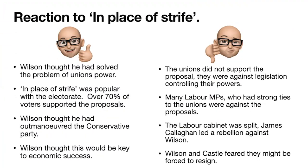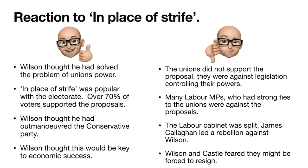Looking at the reactions, there are two sides to this argument. First, Wilson thinks he's solved the power of the unions — bringing them into control will make it easier to manage the economy. Secondly, In Place of Strife is popular across the wider population; 70% of the electorate think Harold Wilson and Barbara Castle have done a good thing. Wilson also thinks he's outmanoeuvred the Conservative Party, as he's resolved the union problem before the next election. And he feels this is the route to economic success — controlled unions, resolved balance of payments, Labour can move forward.